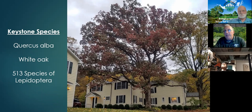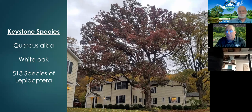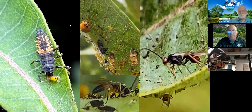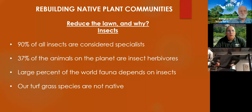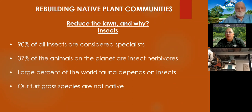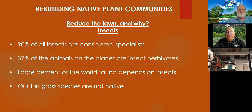Another reason we're not spraying is because we have ladybugs, ladybug larvae, and braconid wasps that parasitize the insects that are problematic in our landscape. We need to nurture these so we don't have to spray pesticides on our properties. We still have a long way to go. Ninety percent of all insects are considered specialists — they need a certain type of plant to proliferate. Thirty-seven percent of the animals on the planet are insect herbivores, and a large percent of the world's fauna depends on insects.